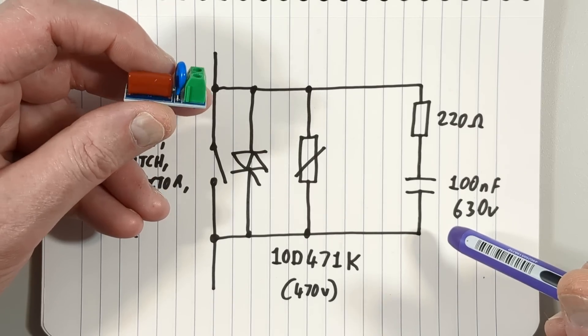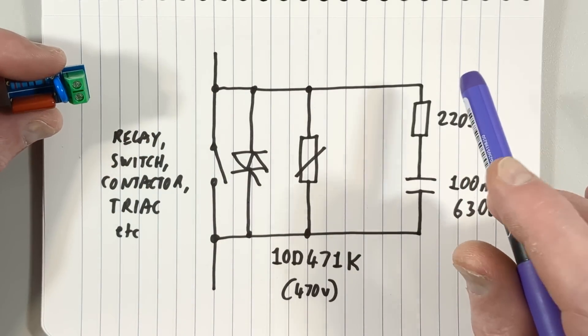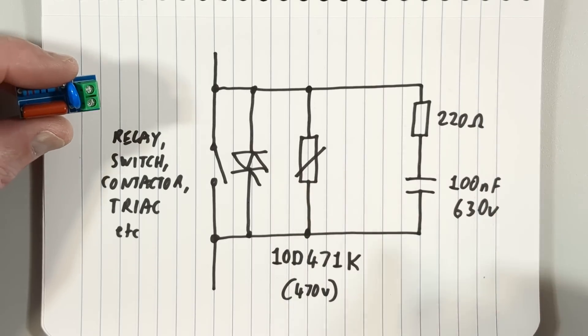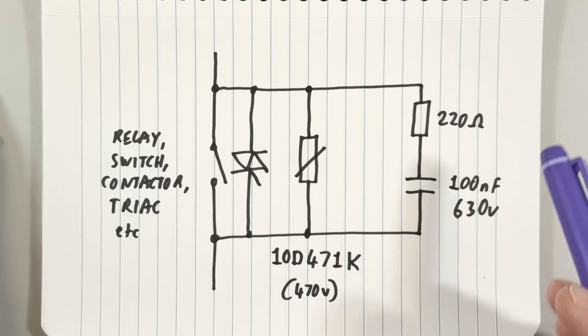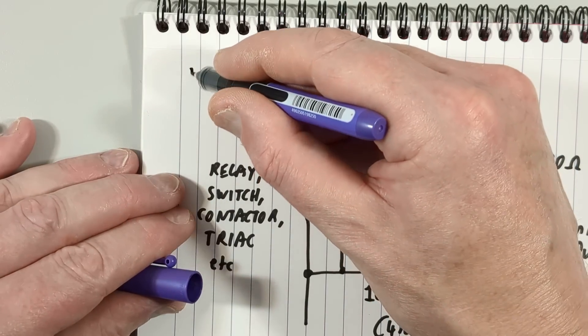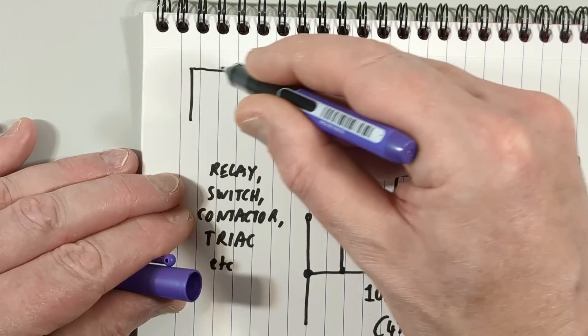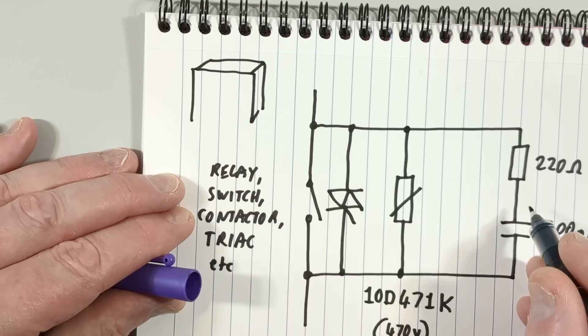Traditionally, the snubber networks of the past were in what looked like a classic rectangular capacitor package, and inside that was basically what you see here.